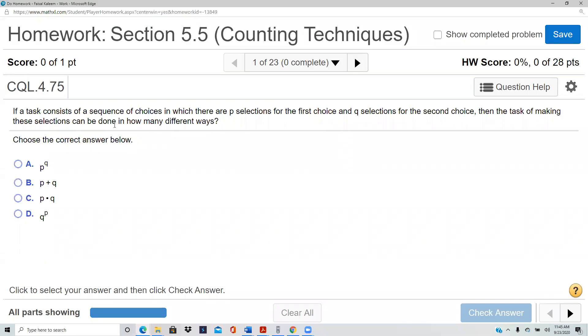If a task consists of a sequence of choices in which there are p selections for the first choice and q for the second choice, then the task of making these selections can be done in how many different ways? So look, p for the first and q for the second. You know that 'and' means multiplication, so it'd be p times q.